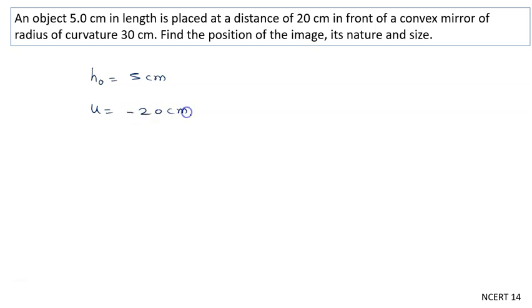In front of a convex mirror. Convex mirror means focal length is positive. Radius of curvature is 30 cm, so R is also positive. Focal length is written as half of radius of curvature, R/2, so it will be 30/2, which equals 15 centimeters.